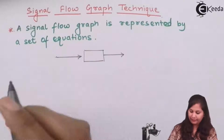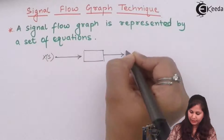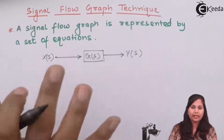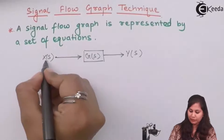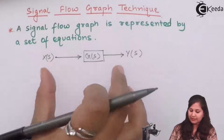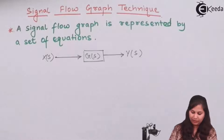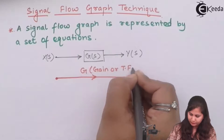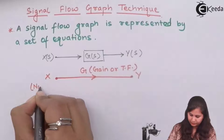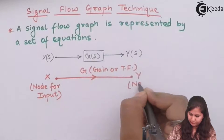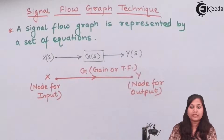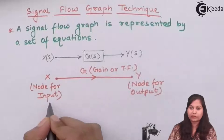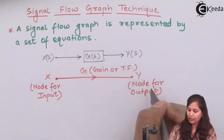If we take an example, we have a simple block diagram in which the input is X(s) and output is Y(s) and the transfer function is G(s). Now if we represent this system by the signal flow graph, then we have two nodes.